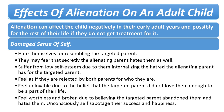They often suffer from low self-esteem as an adult, internalizing the hatred the alienating parent has for the targeted parent. As a child they felt that because the 'evil' parent was part of them — both genetically and through an earlier relationship — they must be evil as well. The alienating parent's rejection will feel to the child as if part of them is also rejected, manifesting as self-hatred in adult life. They may feel unlovable, broken, and not worthy of love or happiness, and may subconsciously sabotage their success and relationships, constantly feeling they are not good enough.